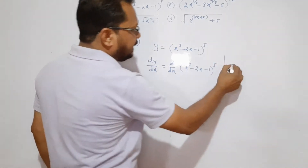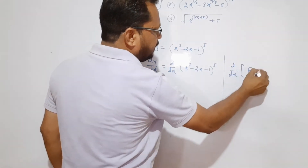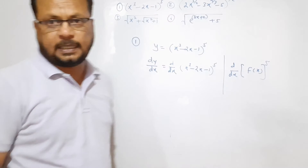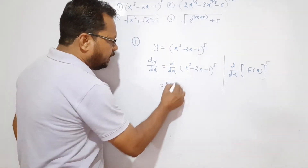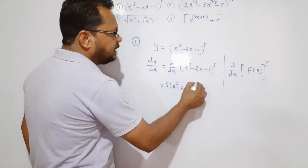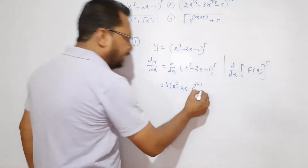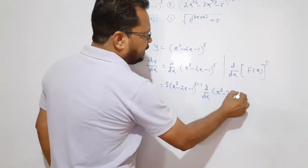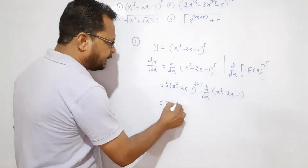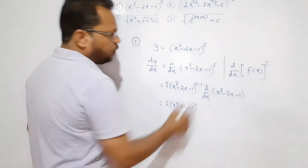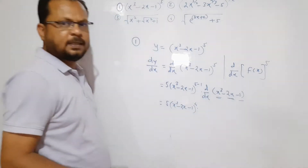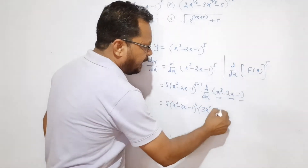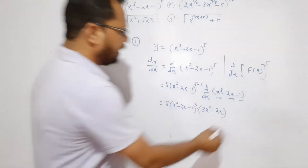It is something like d/dx of [f(x)]⁵, so we apply normal algebraic treatment. We bring down the power: 5 into (x³ - 2x - 1)^(5-1), then multiply by d/dx of (x³ - 2x - 1), giving 5(x³ - 2x - 1)⁴ into (3x² - 2). This is your final answer.